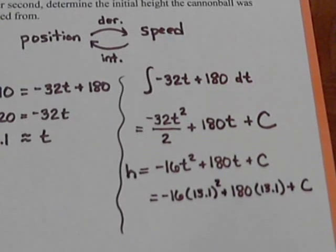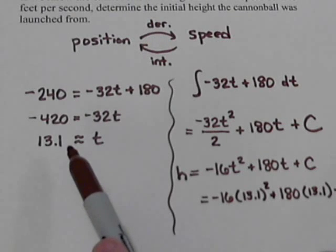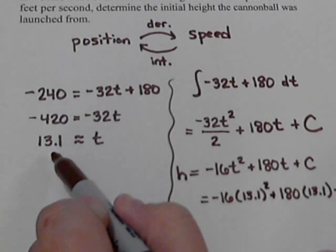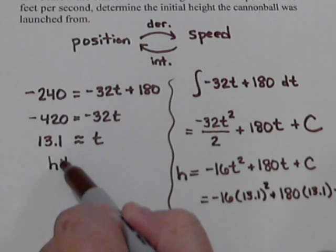Now, it seems like we're just plugging in the only t value we have. We could plug in any t value, as long as we know what the appropriate h value that goes with it is. Well, this 13.1 seconds we had over here, remember what that was. That was the time it took to hit the ground.